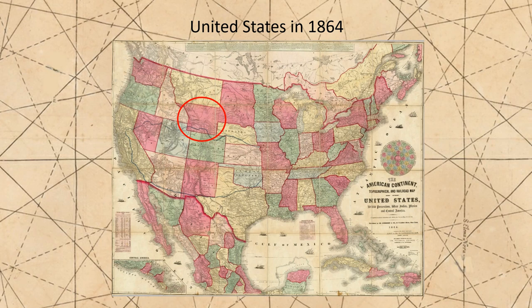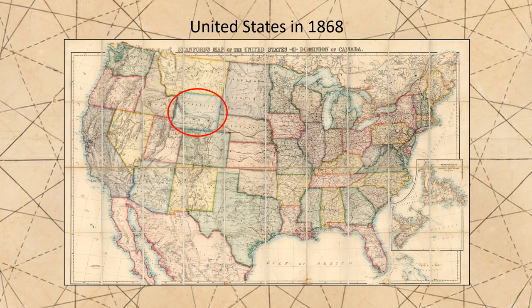Those nine territories were Louisiana, Missouri, Indian, Utah, Nebraska, Dakota, Oregon, Washington, and Idaho. Finally, in 1868, it became part of a tenth territory, the newly formed Wyoming.